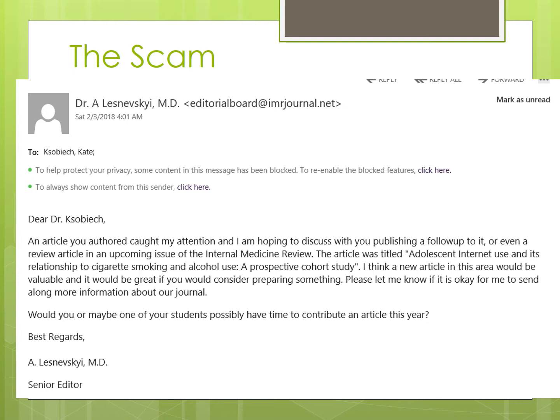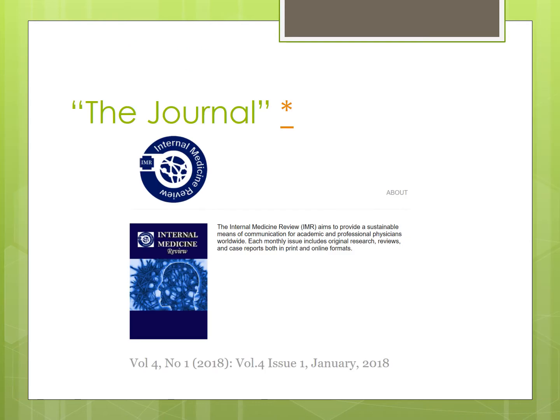I'll get these direct requests from — this is actually a real person, sometimes it's not — the editor of this particular journal saying, hey, we saw an article that you published called, as you can see here, adolescent internet use, etc. Do you have anything else you want to throw our way? When I investigated further, I found what looks like a legitimate journal. However, when you go deeper into how to submit, you find that you have to pay — if you don't haggle, it could be $2,500 just to get something published, which really isn't how the research world ought to work.